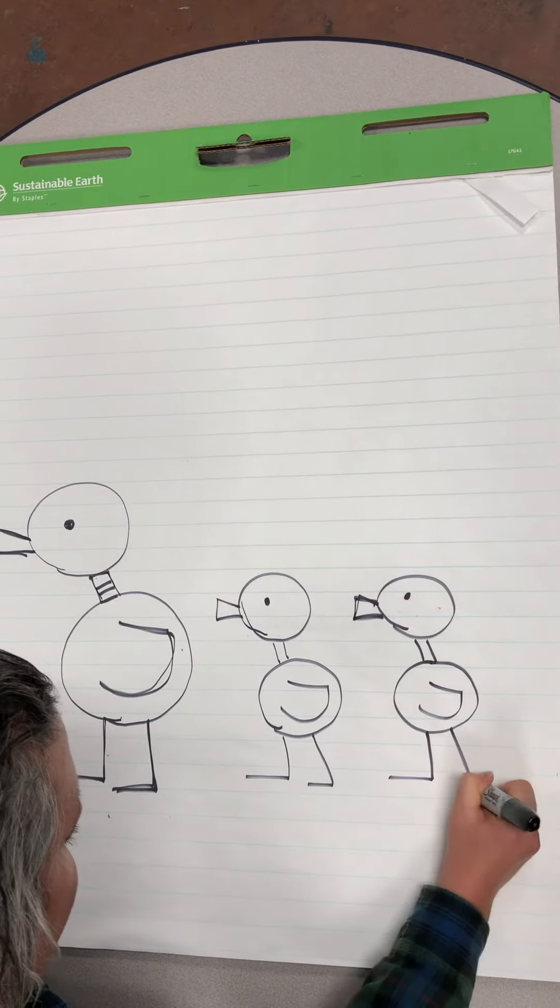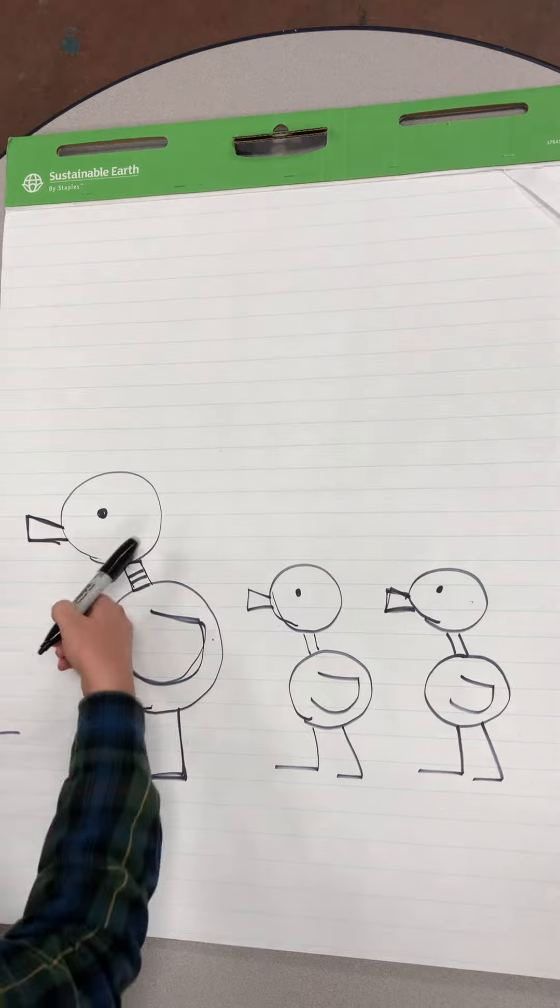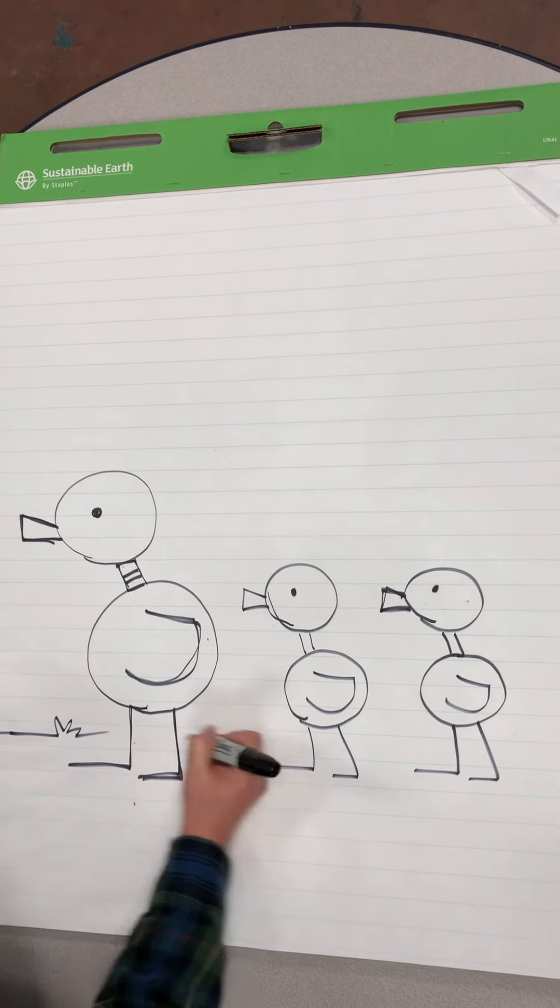Draw a little wing, backwards L, backwards L. Then you got a mama duck and the ducklings following.